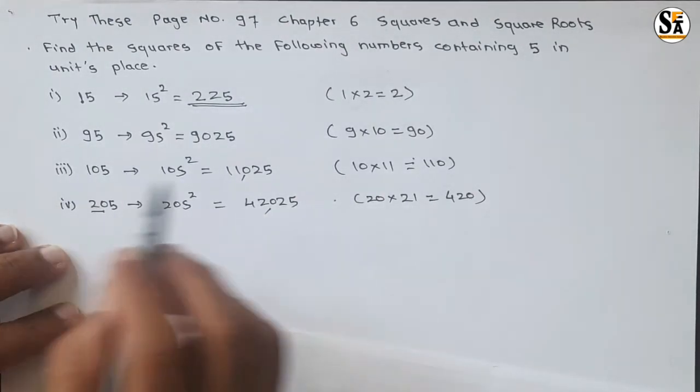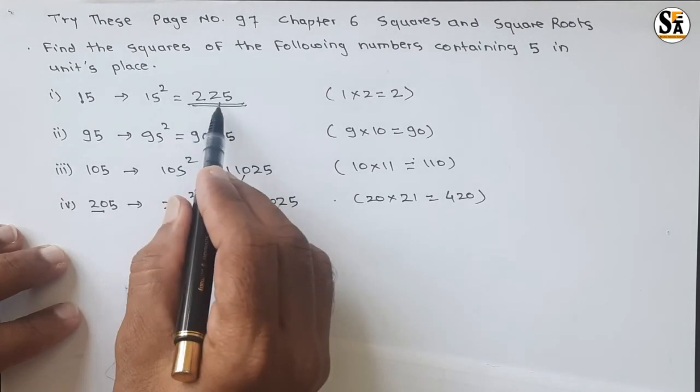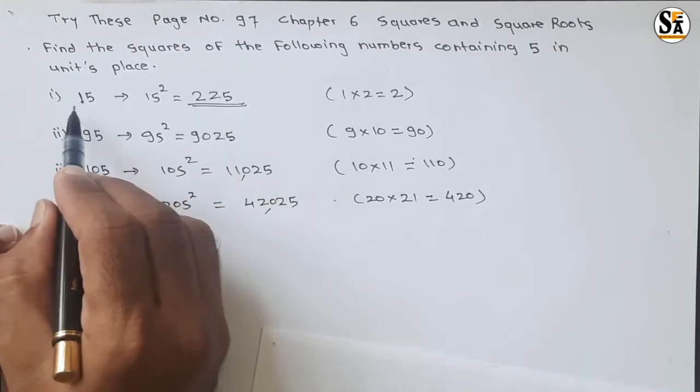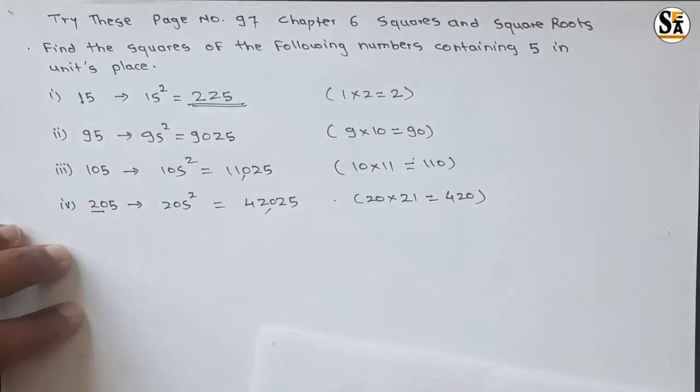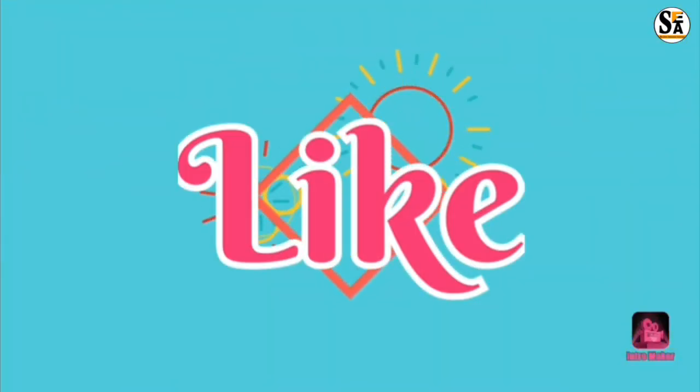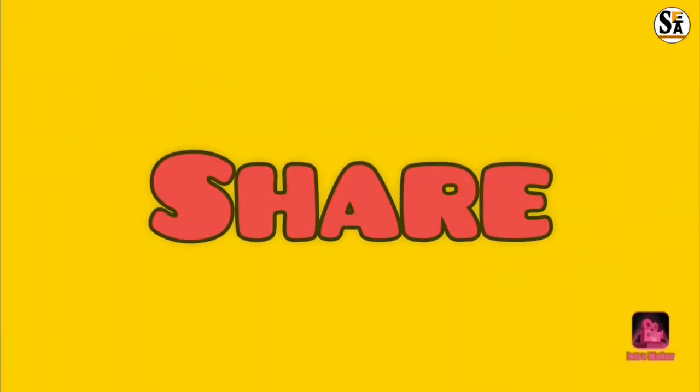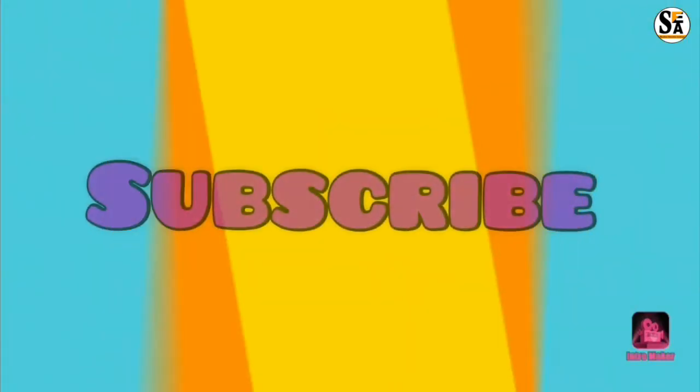So these are the squares of numbers having 5 at unit place. Very easy trick: just write 25, and then the multiplication of the remaining number with its next immediate number. This is all for this video. We will meet again in our next video. Do learn, do enjoy. Thank you.